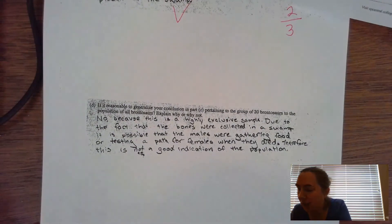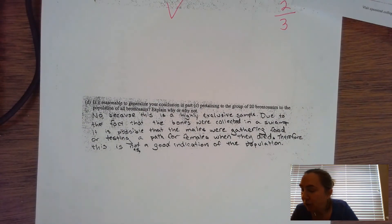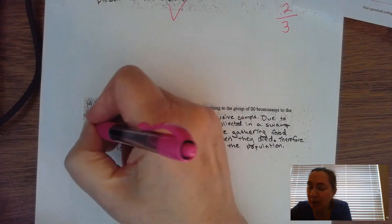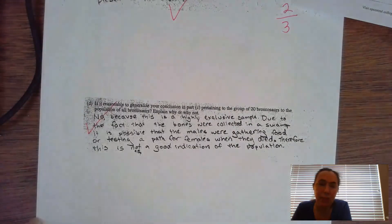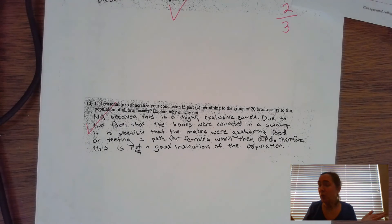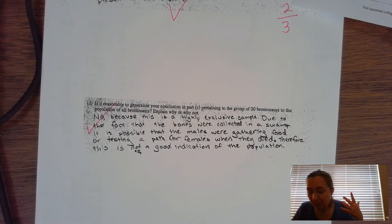The last part: Is it reasonable to generalize our conclusion from Part C pertaining to the group of 20 brontosauruses to the entire population of all brontosaurus? Explain why or why not. In this case there needs to be a negative answer. No, you cannot generalize based on this particular group of dinosaur bones. This was one swamp out of perhaps many swamps that dinosaur bones could be found or where dinosaurs actually were living back in the age of dinosaurs. The answer can be twofold. The first way the AP gave credit is if they said because they are not randomly selecting the bones from across all the different swamps by using some kind of random sampling technique, that gave them credit for justification.